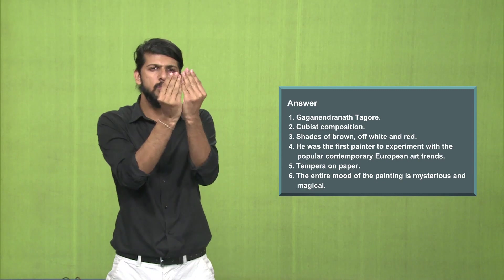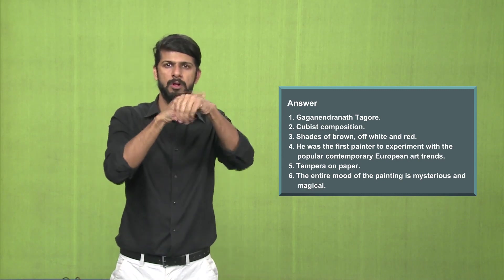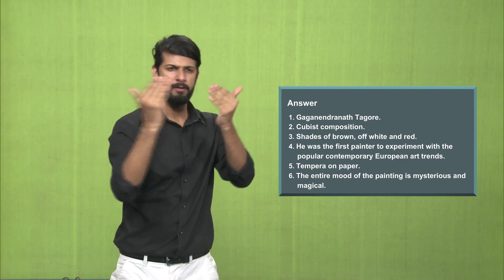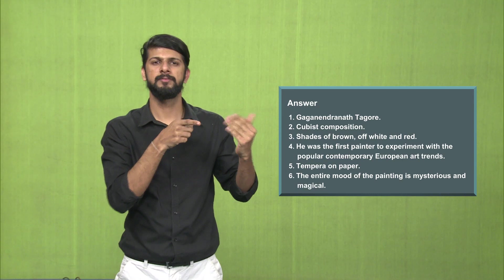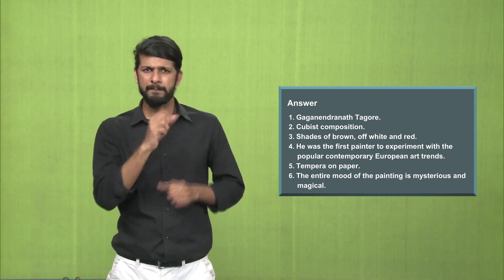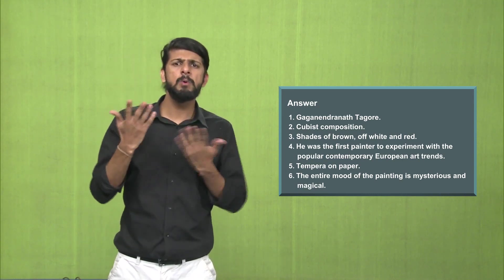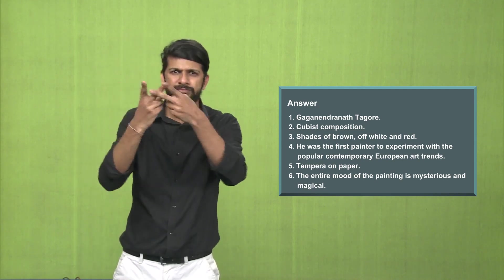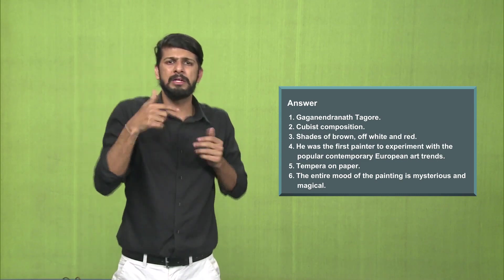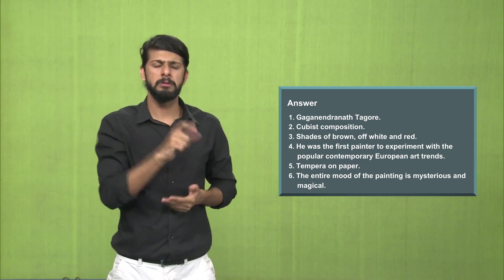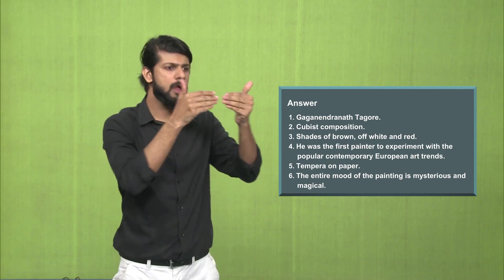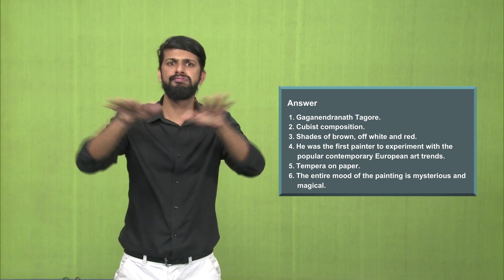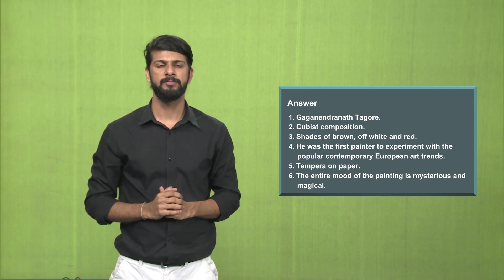Answer number 3, the colors used are the shades of brown, off-white and red. Answer number 4, Gagendranath was one of the first painters to start experimenting with the popular contemporary European art styles and trends. For example, the cubist art style which was very popular in Europe was experimented by Gagendranath.